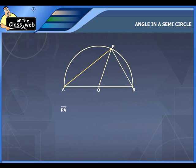Here PA vector is equal to PO vector plus OA vector. Similarly, PB vector is equal to PO vector plus OB vector.